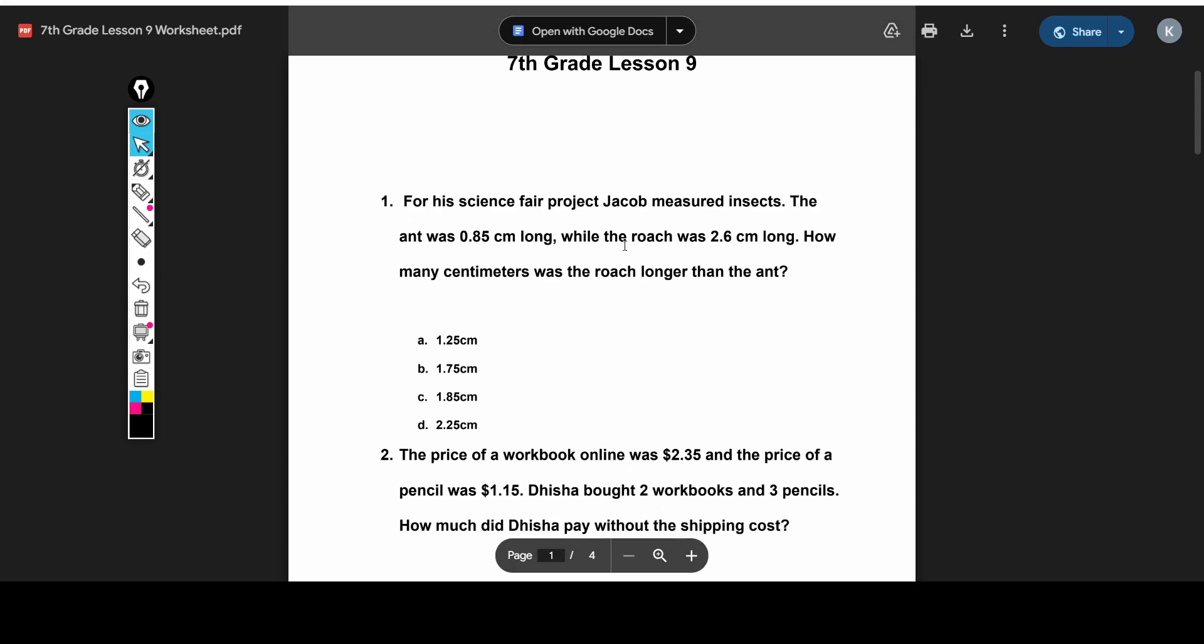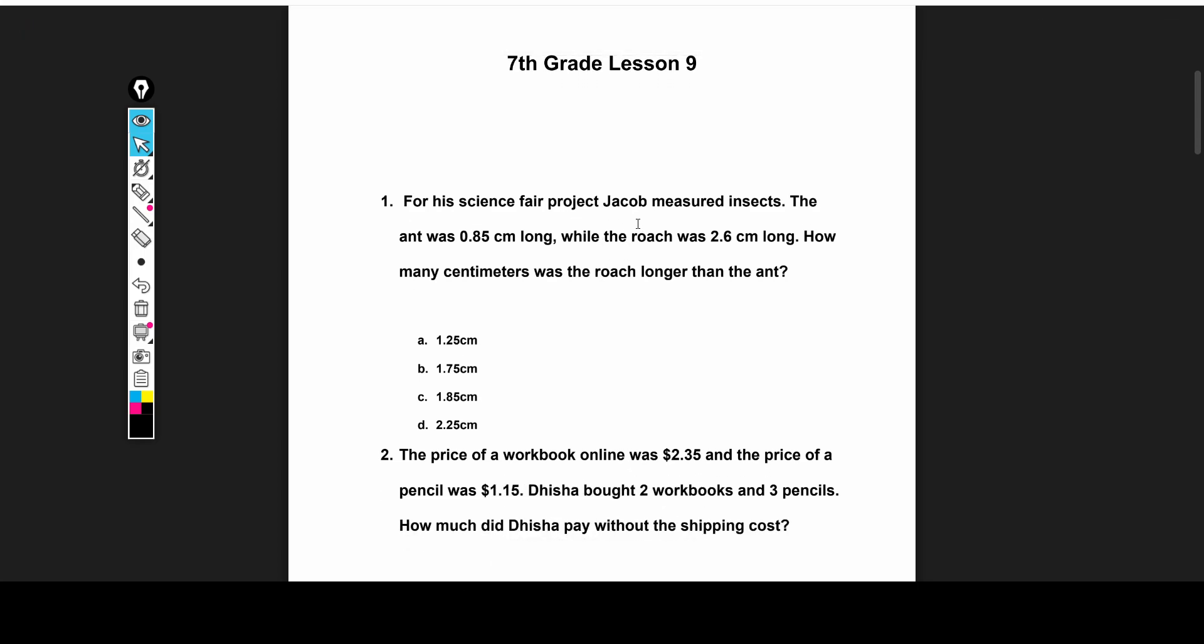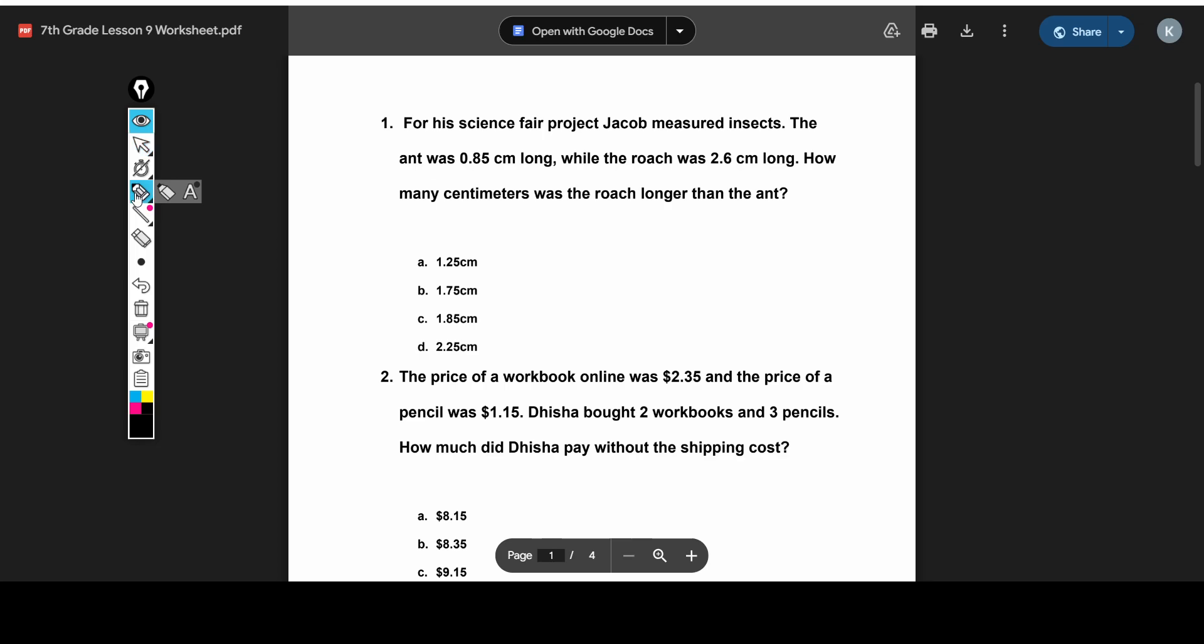For our first problem, we have Jacob who's measuring insects. An ant is 0.85 centimeters long, while the roach is 2.6 centimeters long, and so you want to see how many centimeters the roach is longer than the ant. Since we're comparing two things, two lengths, to find their difference, we have to subtract.